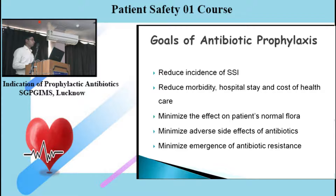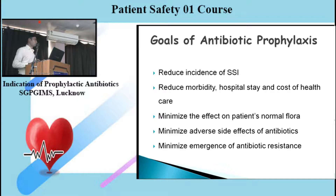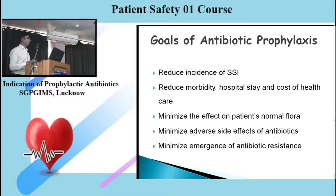What goals are we trying to achieve by antibiotic prophylaxis? First and foremost is reducing the incidence of SSI, which will also contribute to reduction in morbidity, hospital stay, and cost of healthcare. Another goal is minimization of disturbance to the patient's normal flora — especially the GI flora and the oral flora. We also aim to minimize the adverse effects of antibiotics.